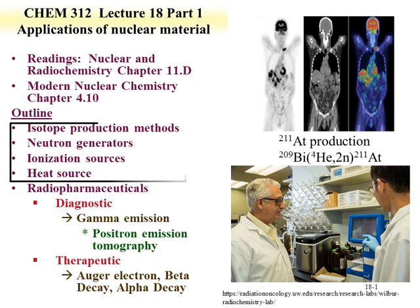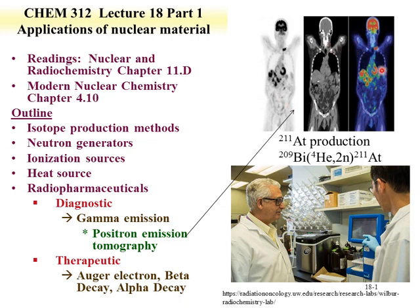The second lecture covers radiopharmaceuticals. There are two types: diagnostic and therapeutic. Diagnostic is primarily performed through gamma emission, for instance technetium-99m with single photon emission, or positron emission tomography. An example is fluorine-18 attached to a molecule used to evaluate behavior and physiological properties, through positron emission that annihilates with an electron producing two photons at 511 keV, 180 degrees from each other.